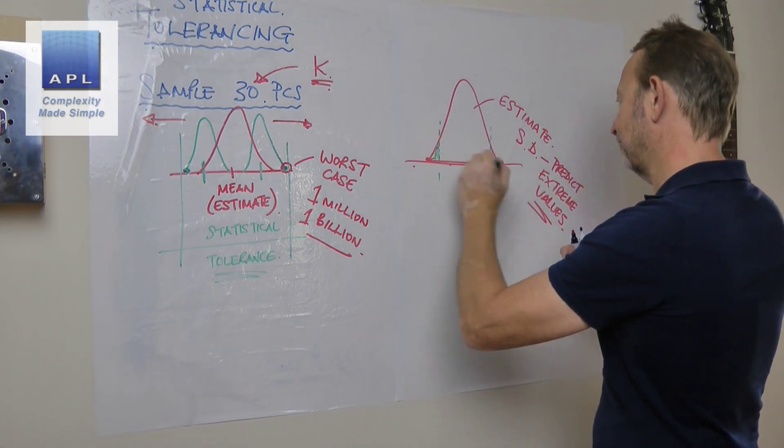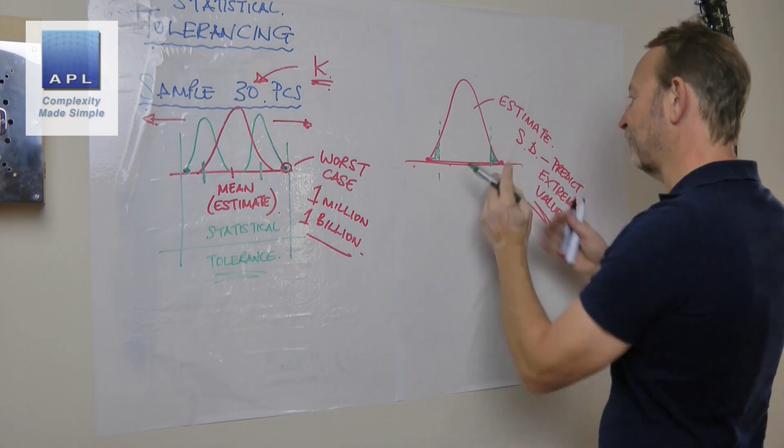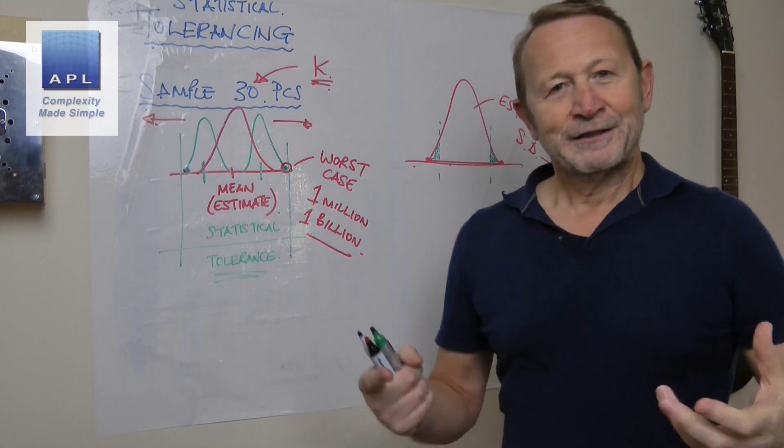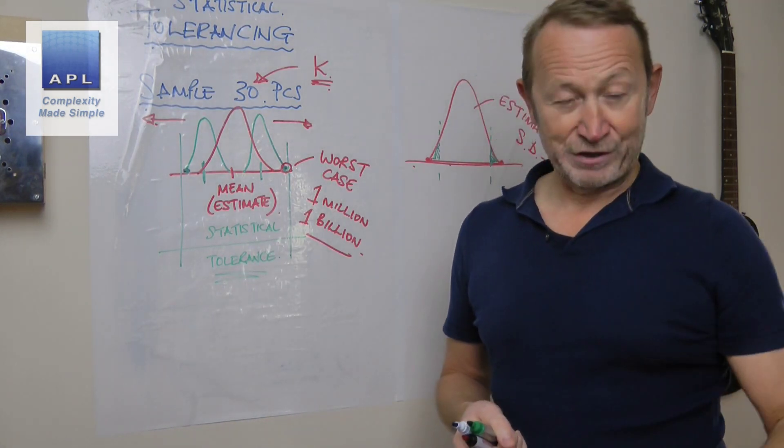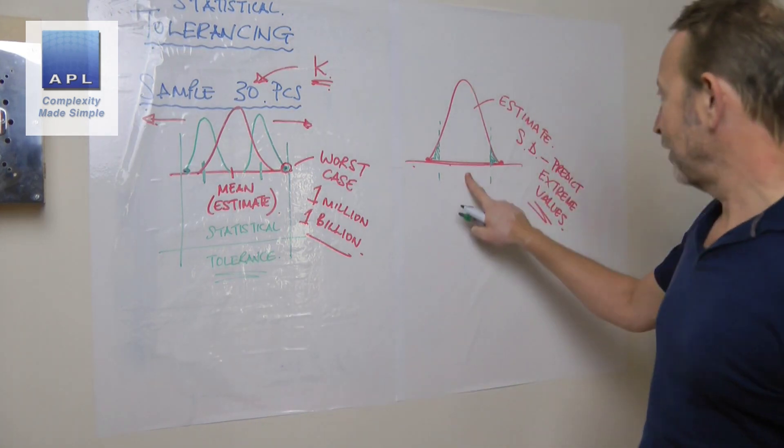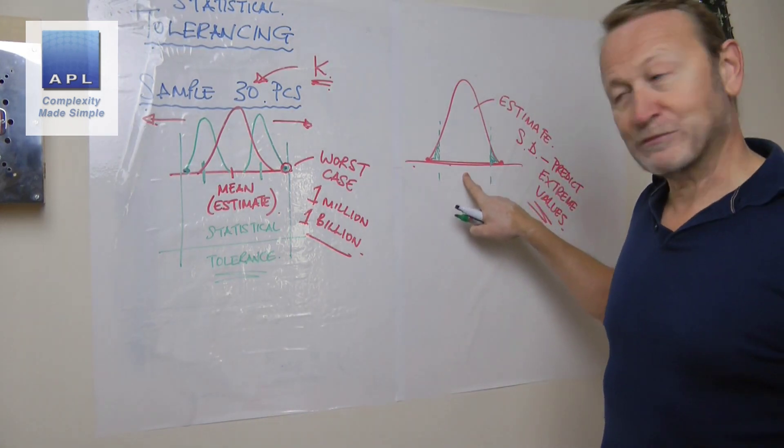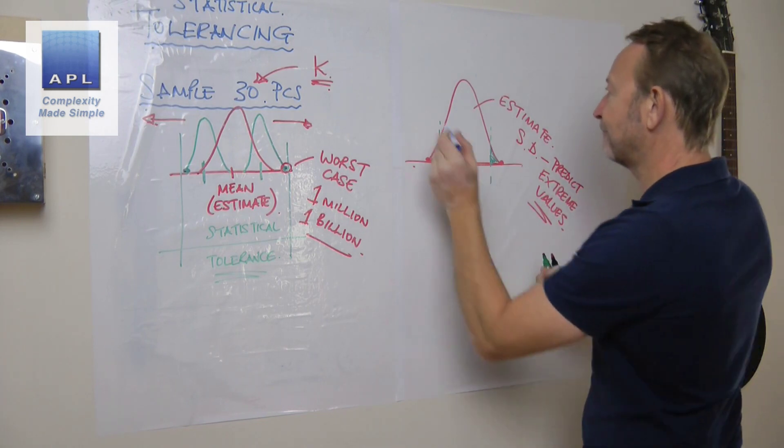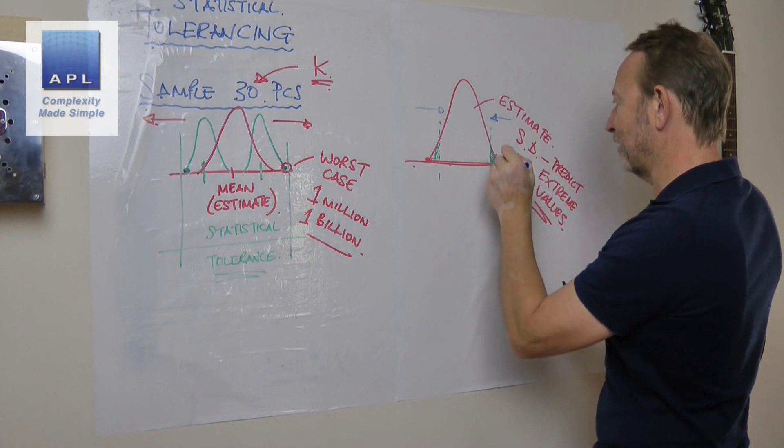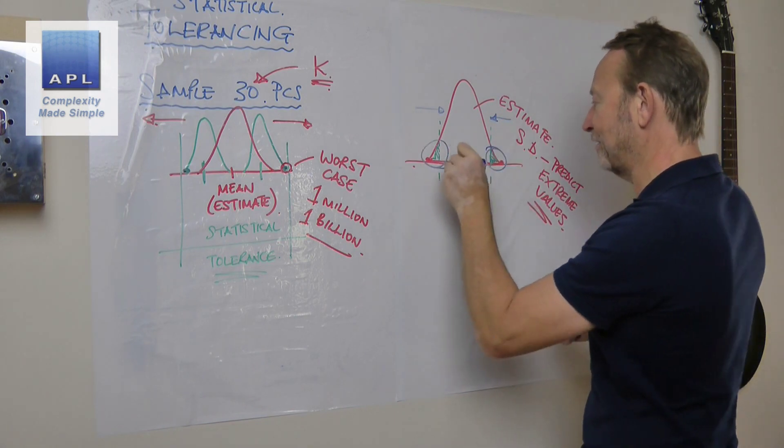Usually, most people when they do this and they create a Cpk, they've got genuine defects to worry about. Most people are not worrying about the statistical errors in their sampling plans - they've got real world problems. What they want to know is: how do I squeeze this thing in and how do I get rid of these horrible defect rates?